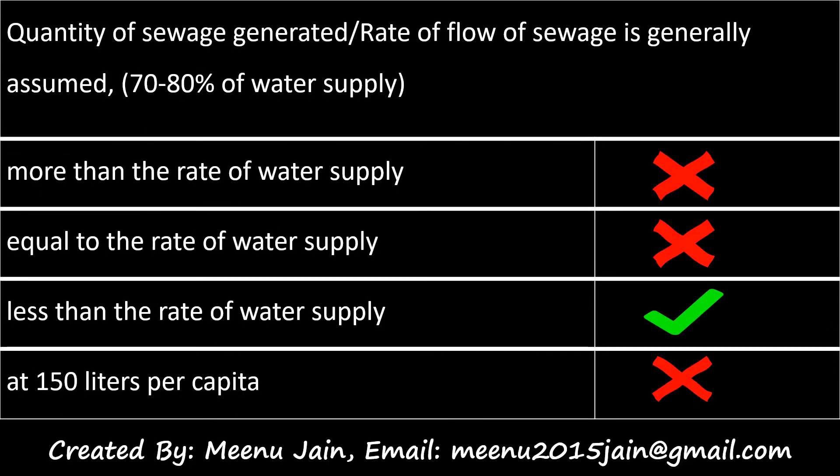Coming back to our question — the quantity of sewage generated or rate of flow of sewage is generally assumed as: we saw that it is 70 to 80% of our water supply, so it cannot be more than the rate of water supply, it cannot be equal to the rate of water supply, and it cannot be at 150 liters per capita. The answer is always less than the rate of water supply.